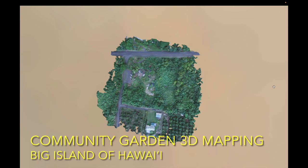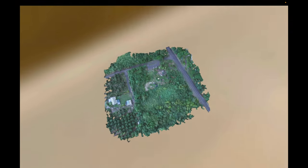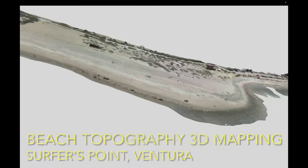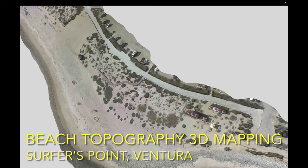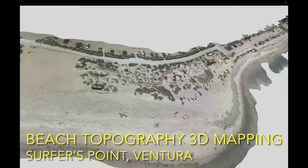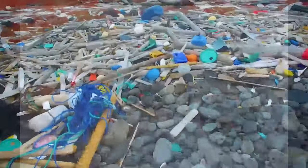We use our aerial flights to create maps of the real world to help us understand what's going on. That could be something like a community garden or a beach that we look at in terms of sediment accretion, oil spills, and all kinds of great stuff — disaster response, everything — with the skills you learn in our cool class.